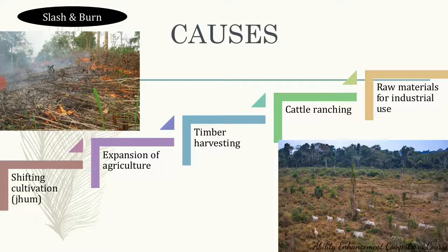The second leading reason for deforestation is the expansion of agriculture. Due to the expanding population and the strain on land resources, there is not enough land available. As a result, even areas that originally had a lot of forest — such as hill slopes — have been converted into farming areas. So the expansion of agriculture is another significant reason for deforestation.